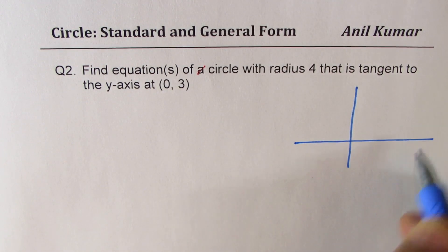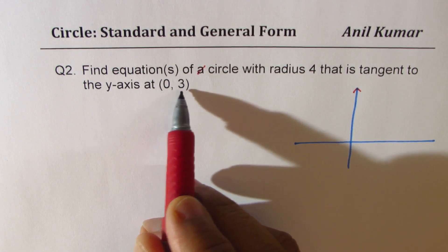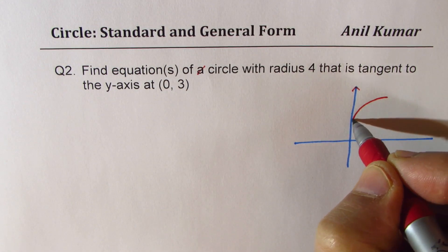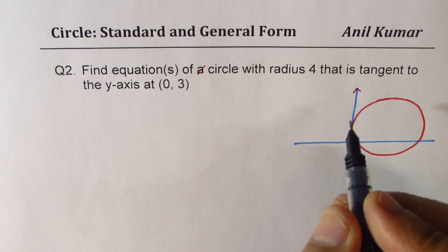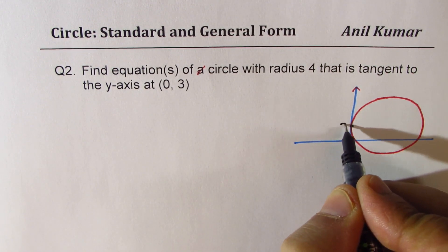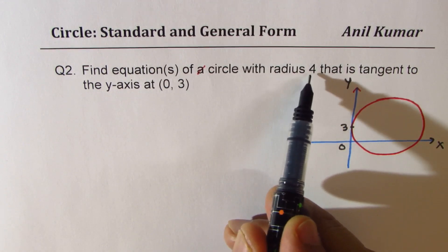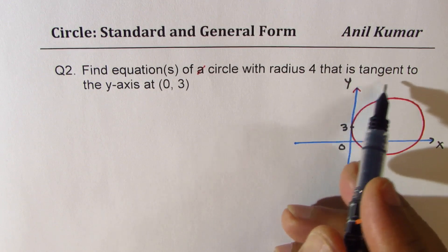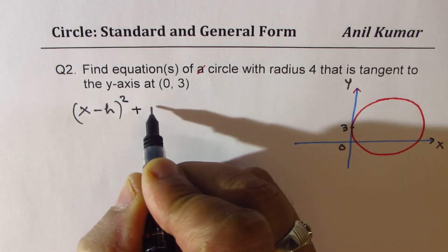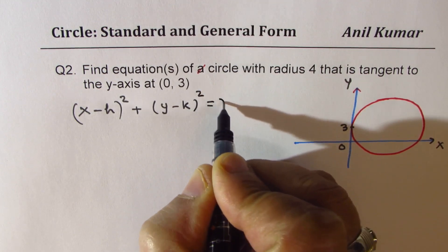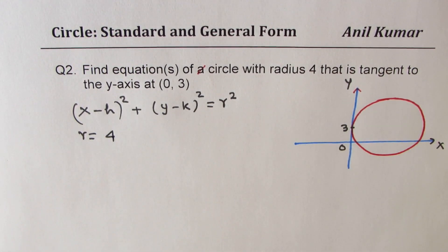We are given that the y-axis is tangent to the circle and we are also given the point (0, 3). Let me draw a circle here. The point of tangency is at (0, 3) and the radius is 4. In standard form the equation is (x - h)² + (y - k)² = r². We know r = 4, but we need to find h and k.